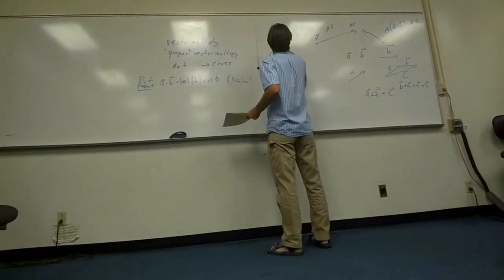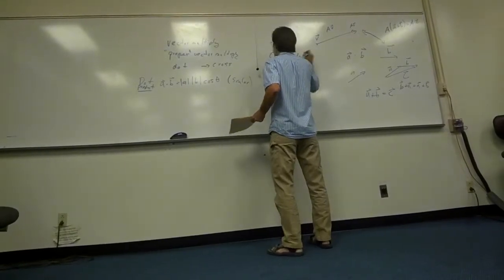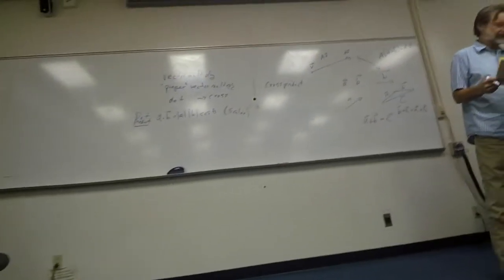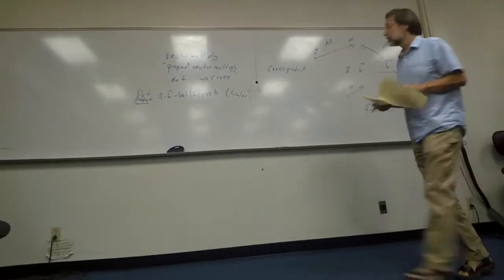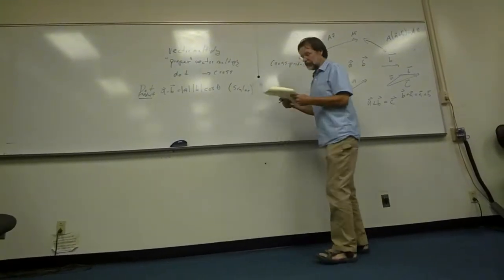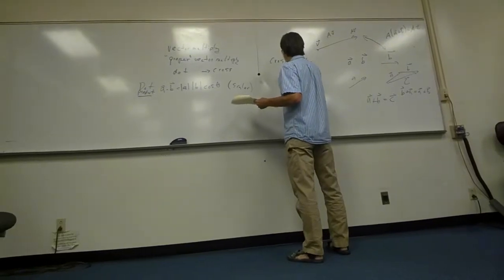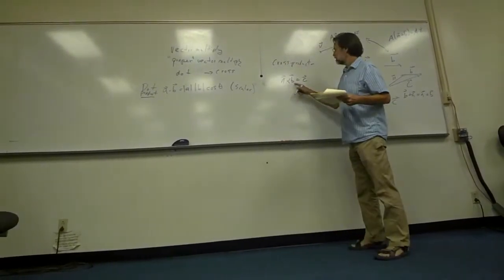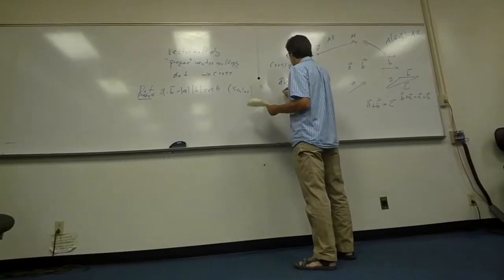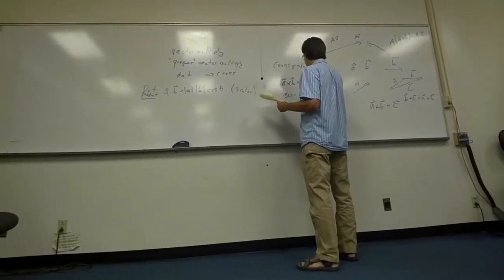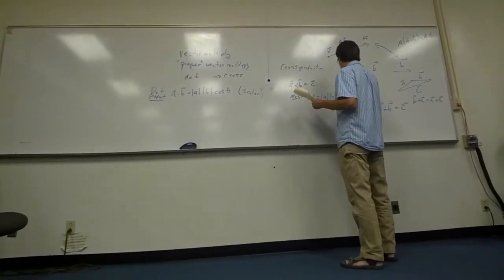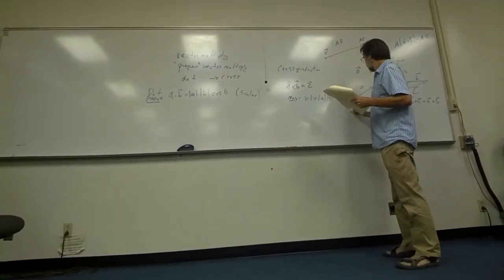So the cross product is similar to the dot product in the sense that it's related to the magnitudes of the two vectors. So the cross product, a cross b equals c, takes two vectors and generates another vector. And its magnitude is c equals magnitude of a, magnitude of b times sine theta, where theta is the angle between a and b.